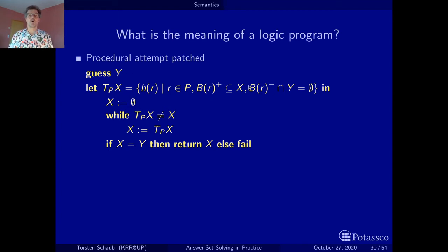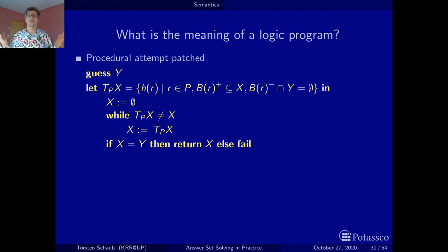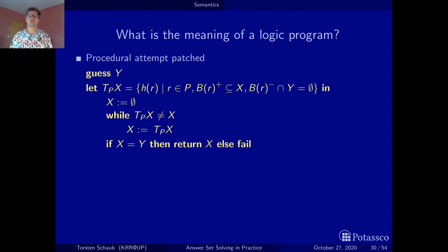The rest of the procedure is unchanged, except at the end we don't simply return the computed x — we check whether x coincides with the guess Y. If they coincide, we have a solution and return it. If they do not coincide, the procedure fails. Let's test this with our examples.